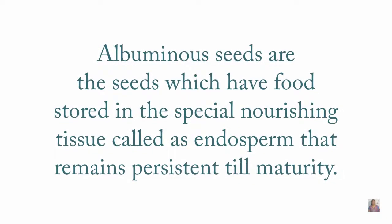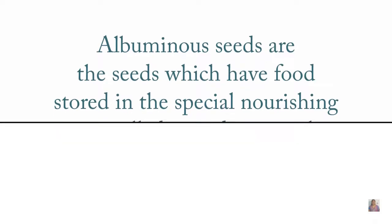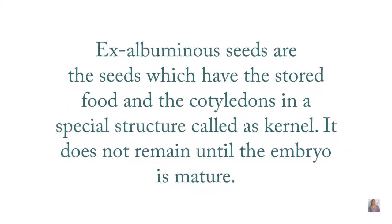Albuminous seeds are seeds which have food stored in special nourishing tissue called the endosperm. This endosperm remains persistent until the germination of the seeds. Exalbuminous seeds are seeds which have the stored food in the cotyledons, and it does not remain until the embryo is fully mature.